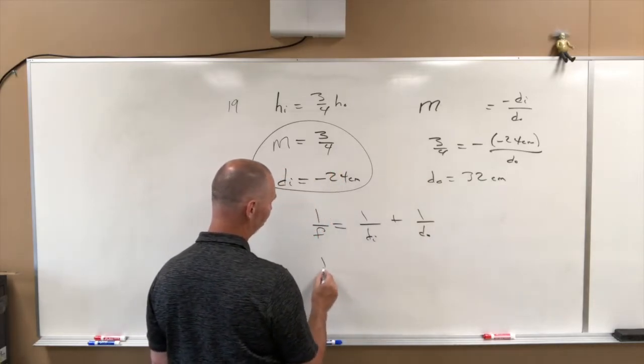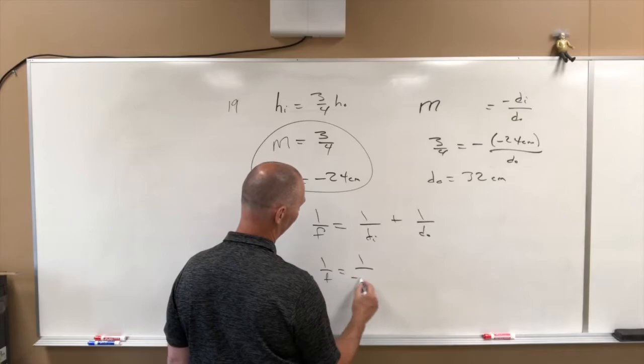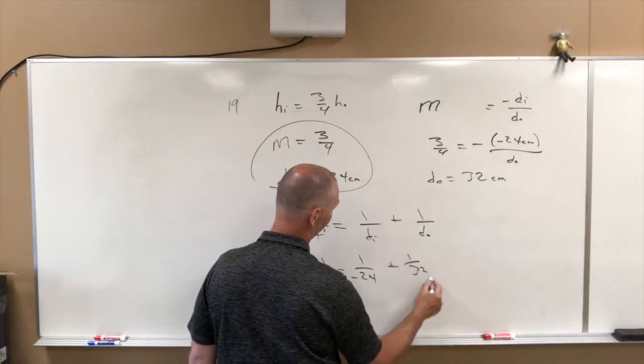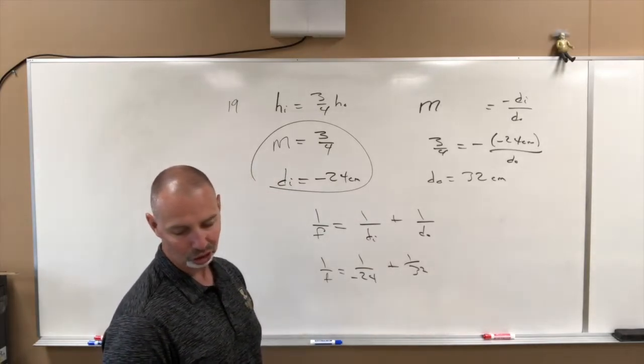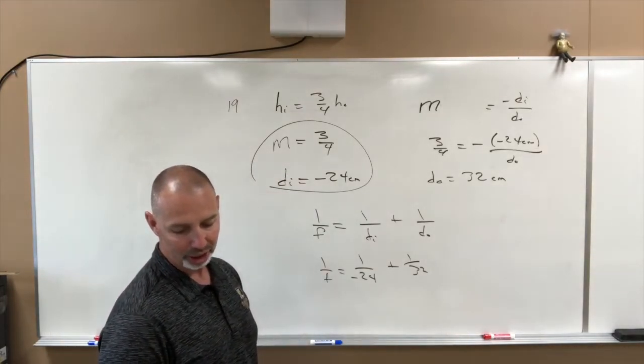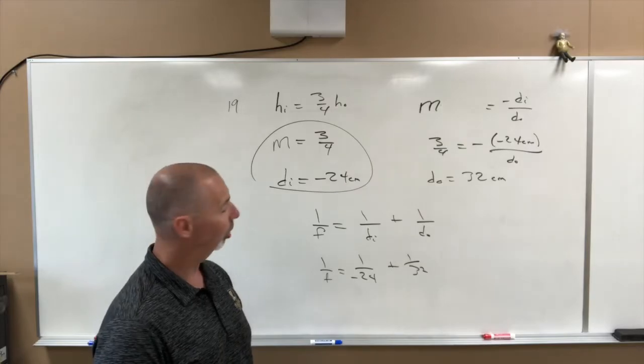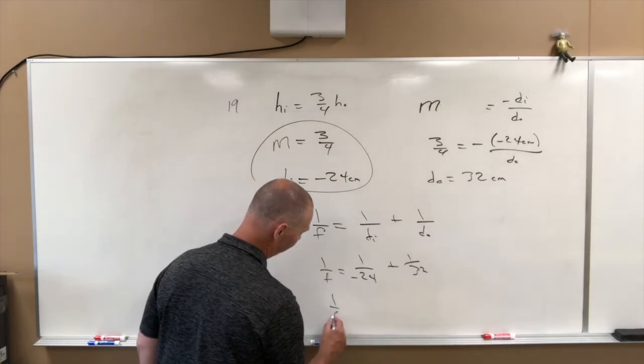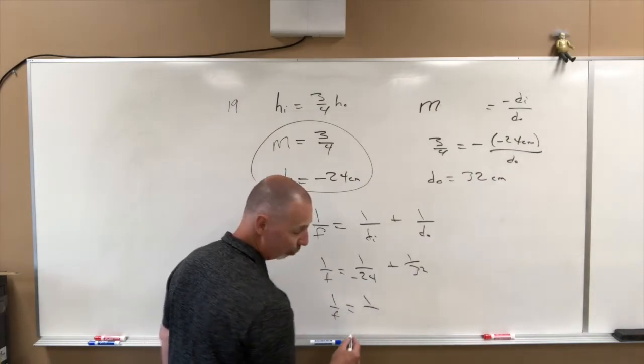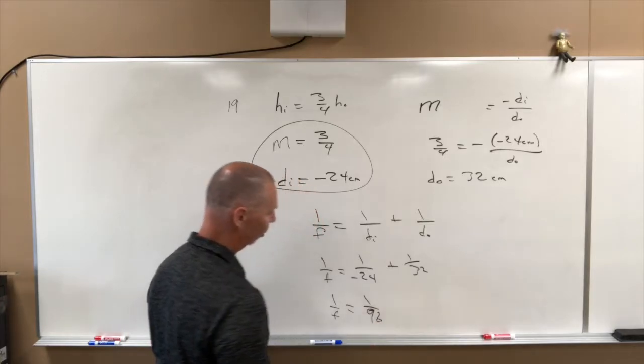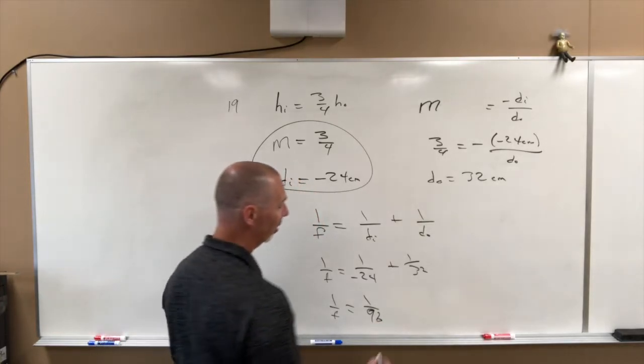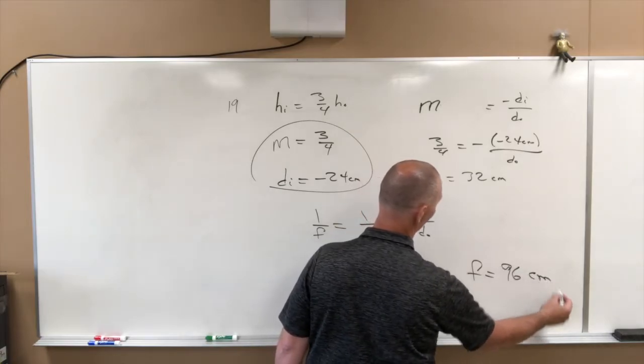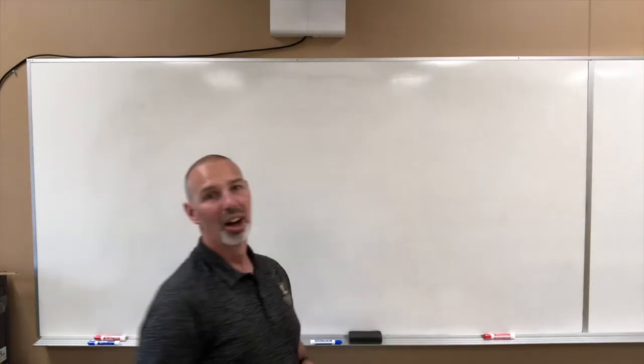Now we'll start plugging in our numbers here. 1 over F equals 1 over negative 24 plus 1 over 32. You could punch this into your calculator. It's not a difficult thing to punch into your calculator. But remember, let's solve it for 1 over F. So if you do this, you're going to get 1 over F equals 1 over 96. That means that F equals 96 centimeters.